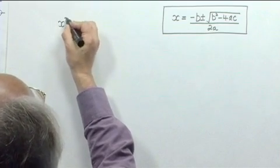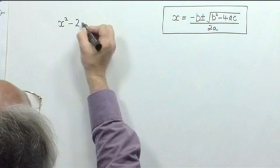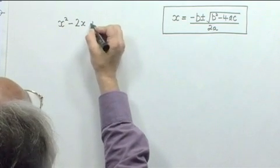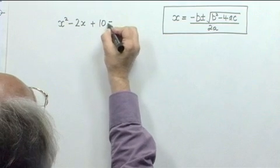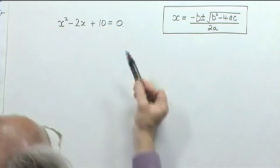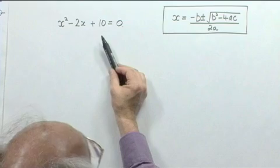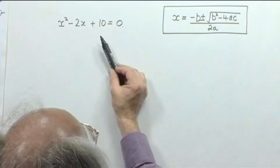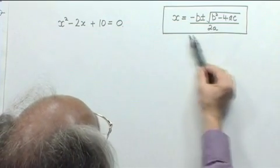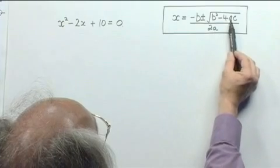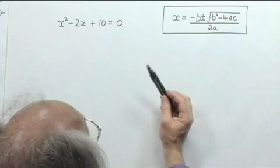Suppose we want to solve the quadratic equation x squared minus 2x plus 10 equals 0. Now we're going to use the formula for solving a quadratic equation. This is the formula over here. And first of all, we need to identify the values of a, b and c to substitute in the formula.